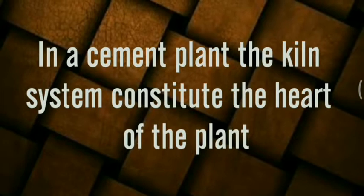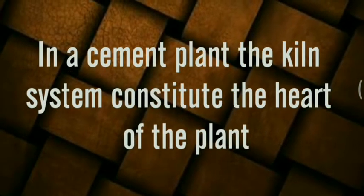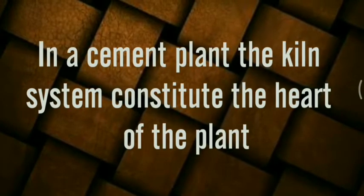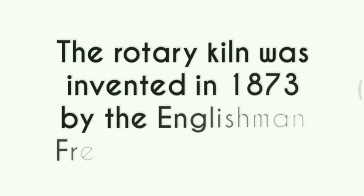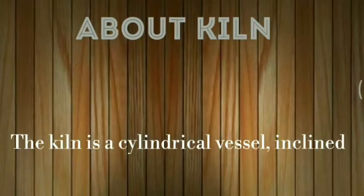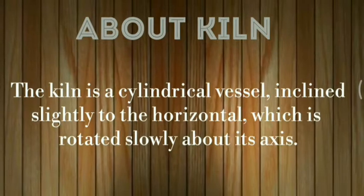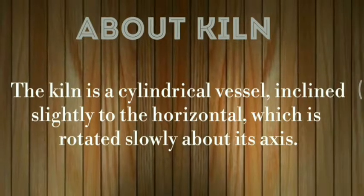In a cement plant, the kiln system constitutes the heart of the plant. The Rotary Kiln was invented in 1873 by the Englishman Frederick Ransom. The kiln system is a cylindrical vessel inclined at 4 to 5 degrees.